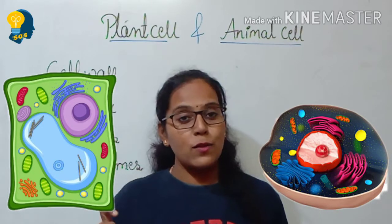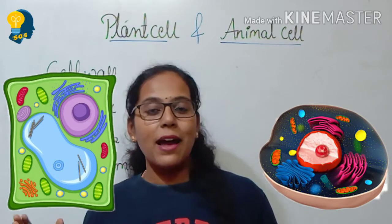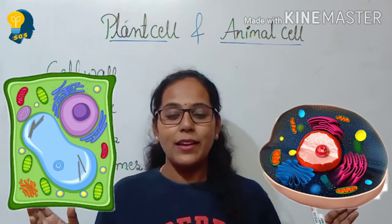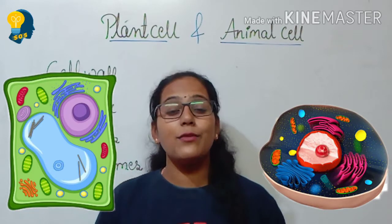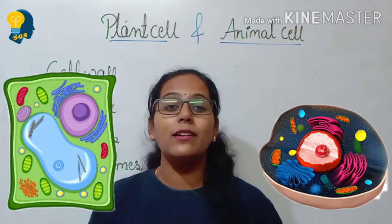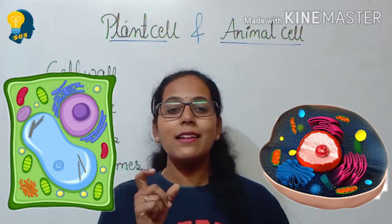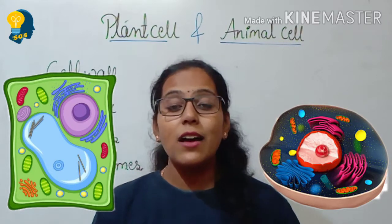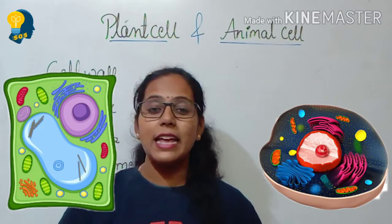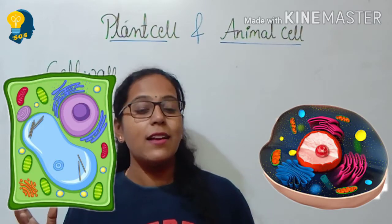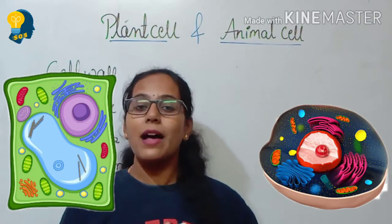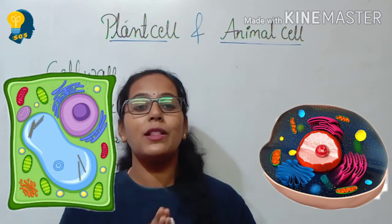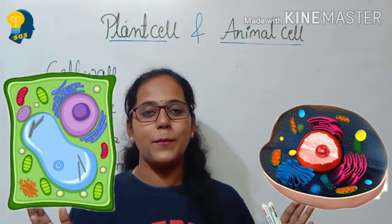So vacuoles are present in plant cells whereas in animal cells they are smaller or absent. The third difference is about color — the color of plants is given by the plastids. Plastids are cell organelles which are present in the plant cell, whereas in the animal cell the plastids are absent. This is the third difference.